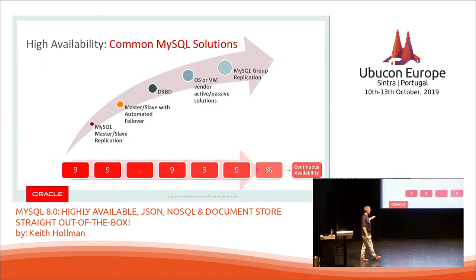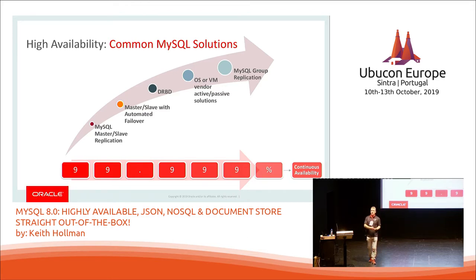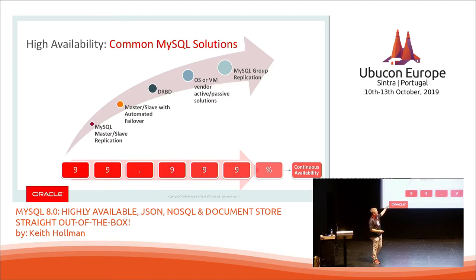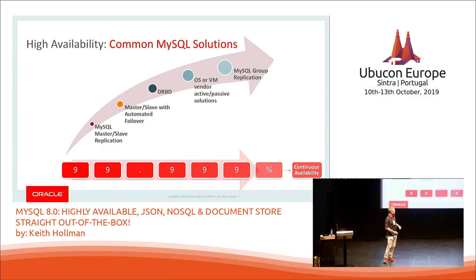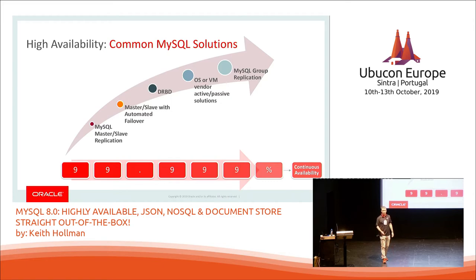High availability — we've got 99% with master-slave replication. That's okay, it's working, we've got a backup. We may have to do manual processes to switch over to our slave. We can automate those with an automated failover script, or use DRBD or other OS and vendor active-passive solutions, increasing to 99.99%. But if you want something more automated and seamless to your application, use group replication and InnoDB cluster, make it a whole lot easier.